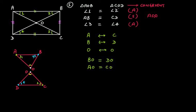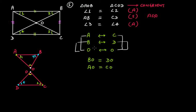BO of triangle AOB is equal to DO of triangle COD, and AO of triangle AOB is equal to CO of triangle COD. So BO equals DO and AO equals CO. We have proved that the two diagonals bisect each other.